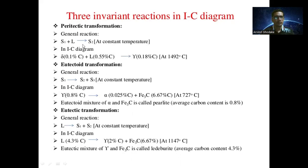Here, S1 is solid one, L is the liquid, and S2 is solid two. In the iron-carbon equilibrium diagram, delta (δ) is solid one, which has 0.1 percent carbon. The liquid contains 0.55 percent carbon. Once the reaction occurs, it produces austenite (γ), which is solid two, containing 0.18 percent carbon at 1492 degrees Celsius.